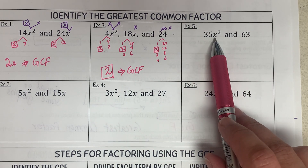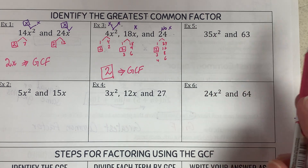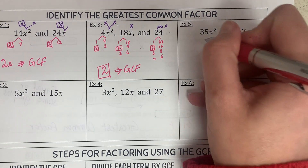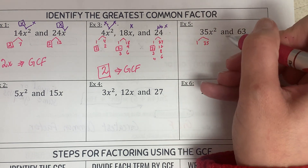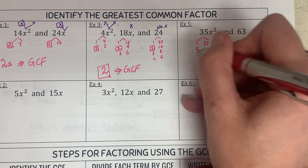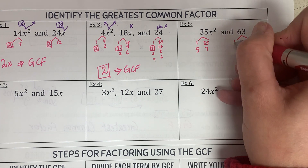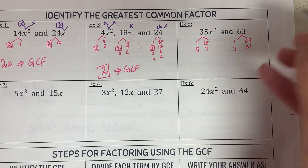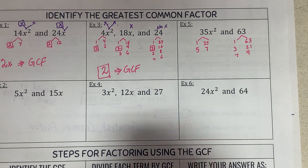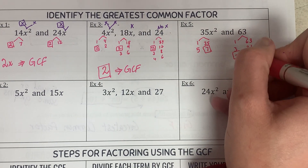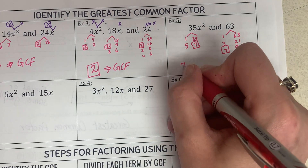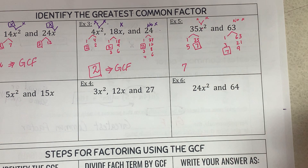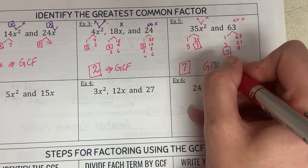For example 5: 35x squared and 63. I can see there's no x in 63, so no variable is common. For the coefficients — factors of 35: 1×35, 5×7. Factors of 63: 1×63, 3×21, 7×9. The biggest number common to both is 7. So the greatest common factor is 7.